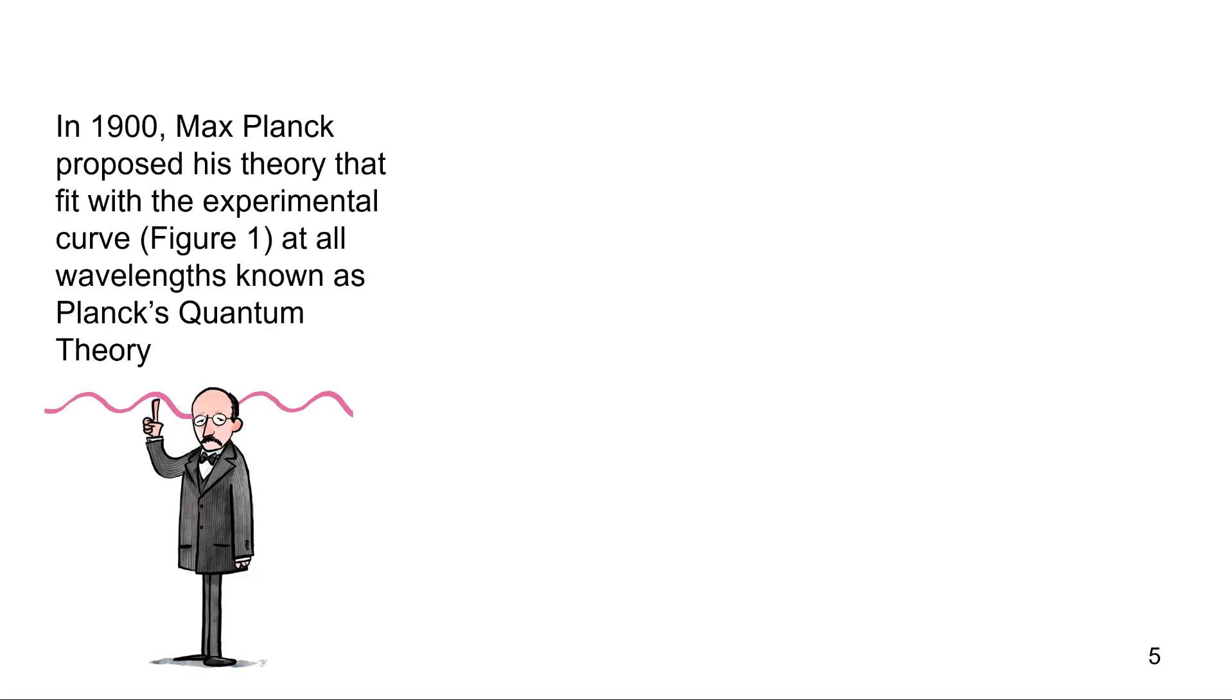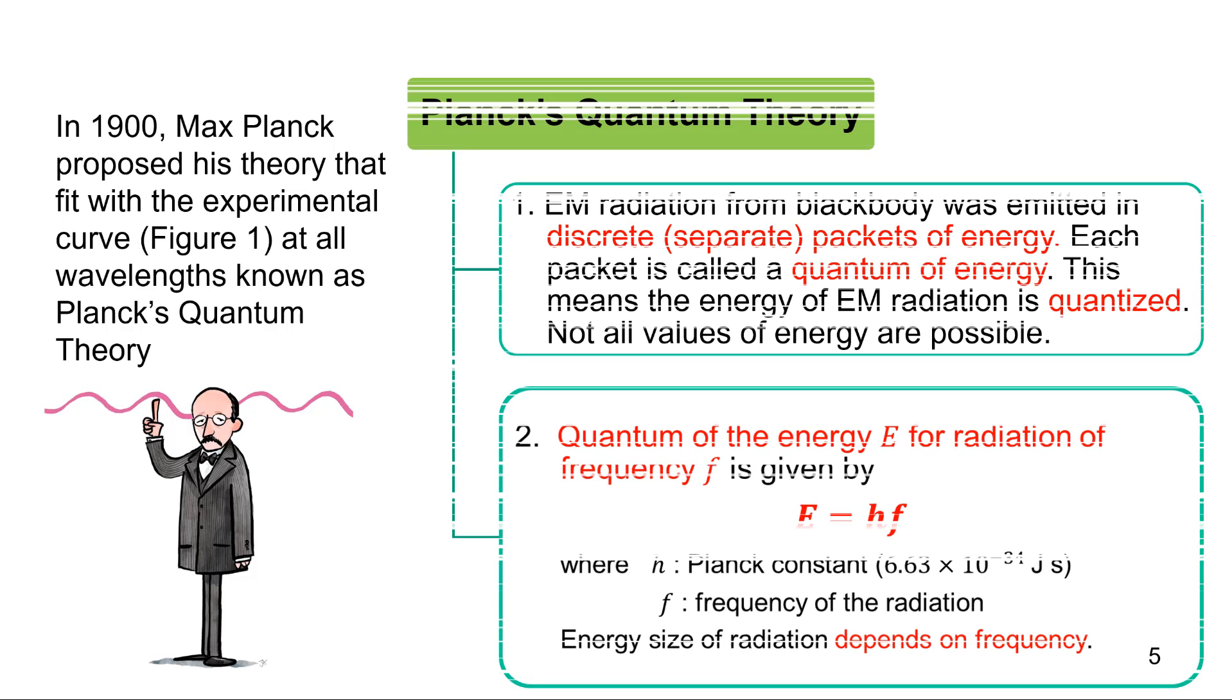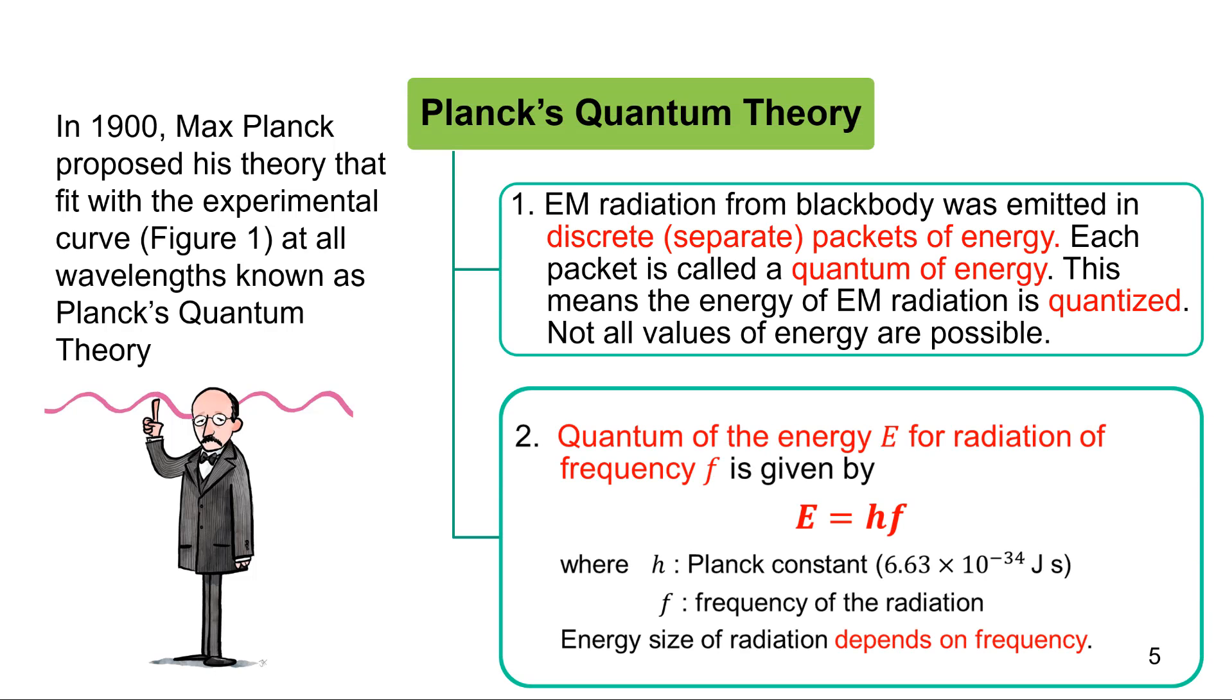In 1900, Max Planck proposed this theory that fits with the experimental curve at all wavelengths known as Planck's quantum theory. In this theory, all EM radiation emitted are in discrete packets of energy, or quantized, meaning that not all values of energy are possible.